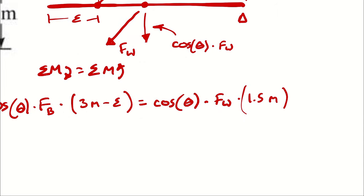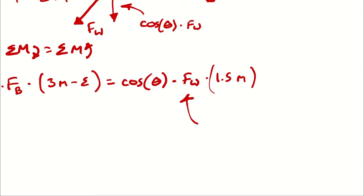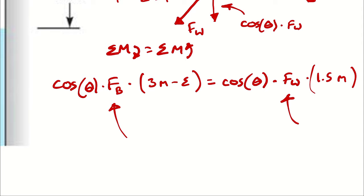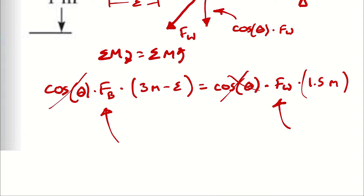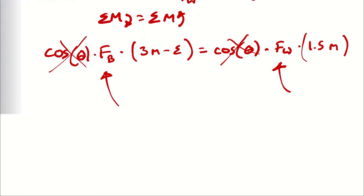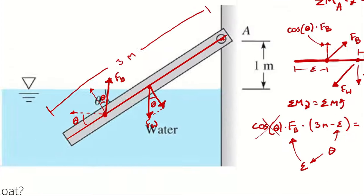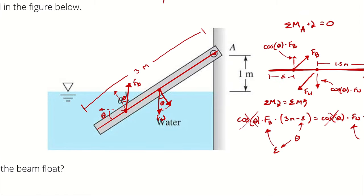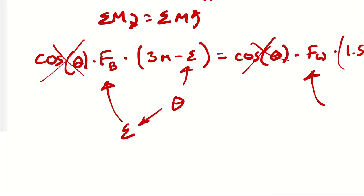We have enough information to calculate the weight of the beam, and we have enough information to write out the buoyant force. We can make our math a little bit easier by canceling the cosine of theta. Now, theta is the thing we want — but it's okay to cancel it here because Fb is going to be a function of theta, because Fb is a function of epsilon and epsilon is a function of theta.